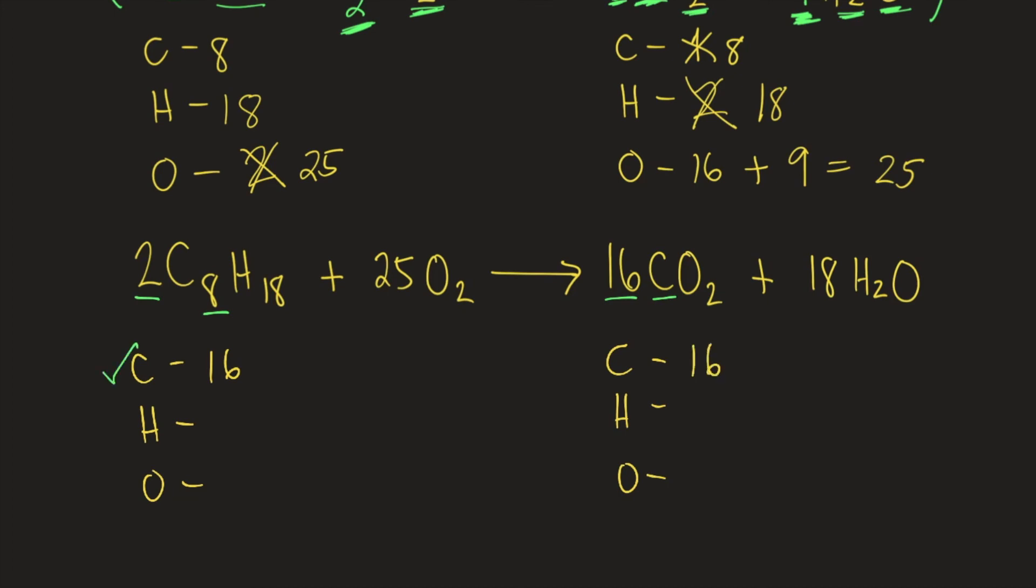For hydrogen, on the left side, we have 2 times 18, that's 36. On the right side, we have 18 times 2, that's 36. So hydrogen is balanced.